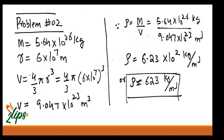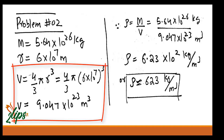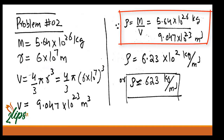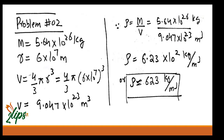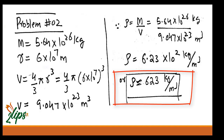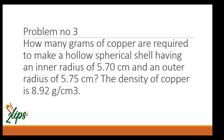The volume of a sphere is (4/3)π r³. Putting in the value of r and taking its cube, I get the volume as 9.047 × 10²³ meter cubed. Putting the values of mass and volume into the density formula and solving, the value of density is 623 kg per meter cubed.